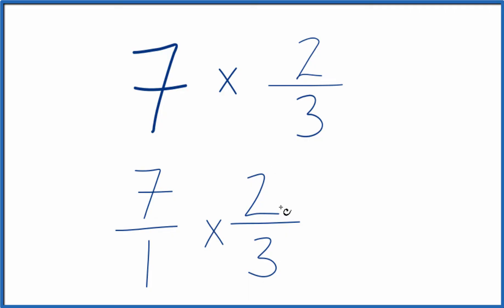When we multiply fractions, we're going to multiply the numerators and the denominators. 7 times 2, that equals 14. 1 times 3, that equals 3. So 7 times 2 thirds equals 14 thirds.